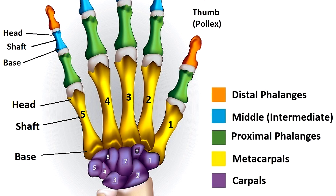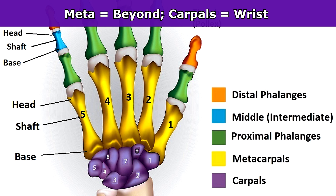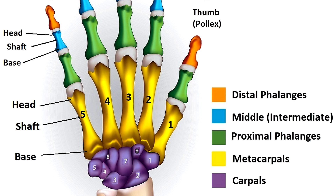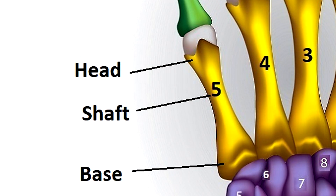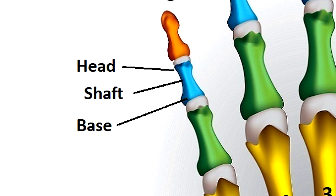The metacarpus or palm contains the long bones called metacarpals. You have five of them. The prefix meta means beyond and the word carpal comes from Greek and Latin words that mean wrist, so the metacarpals are the bones just beyond the wrist. These metacarpal bones are numbered one through five, with one being the metacarpal proximal to the thumb and five being the metacarpal proximal to the little finger. Each metacarpal has a base which articulates with the carpals, a shaft also called a body, and a head which articulates with the phalanges. The phalanges also have a head, shaft, and base.